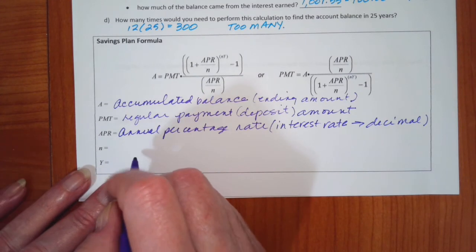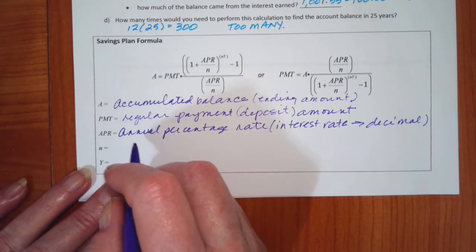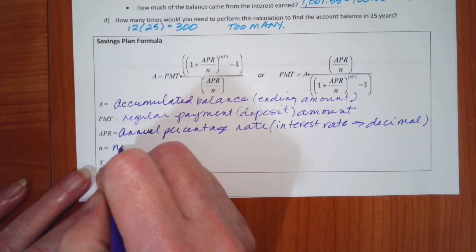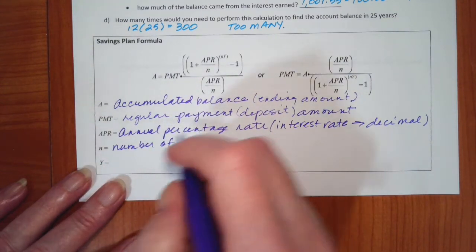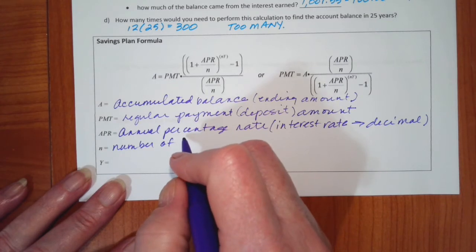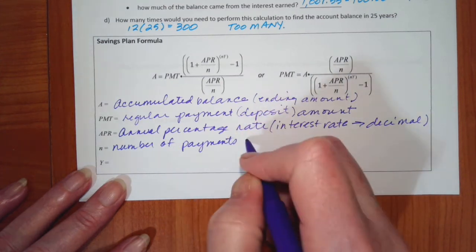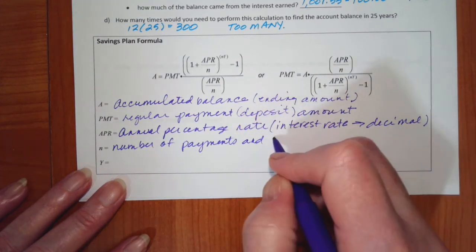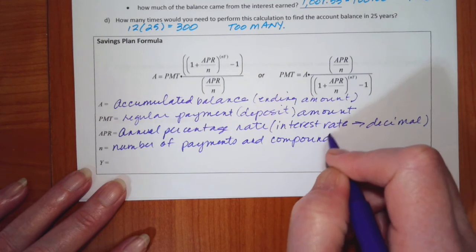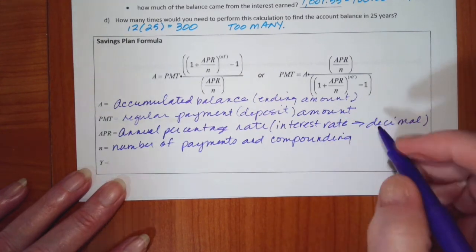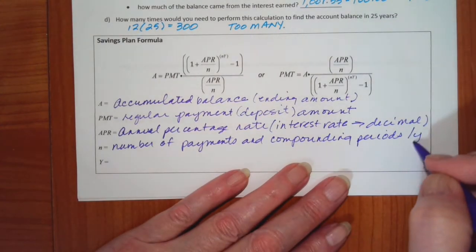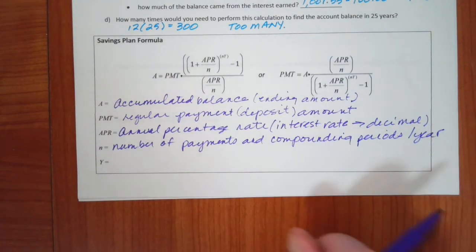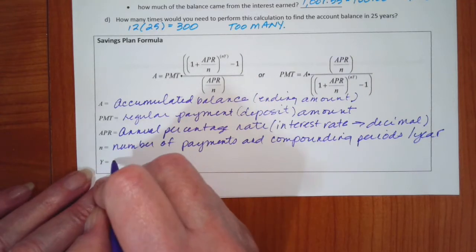Notice we don't have a principal anymore because that was a lump sum. It is being replaced with our regular monthly payment. The APR is the annual percentage rate, which is just your interest rate converted, of course, to a decimal. Now, N, it represents, as I said before, it is the number of compounding periods, but that's the same as the number of payments. So it's the number of payments and compounding periods per year. And I worked too big, I ran out of room. And Y, of course, is the number of years.